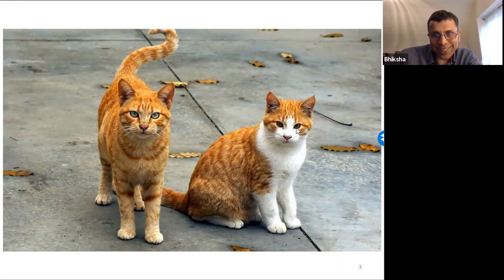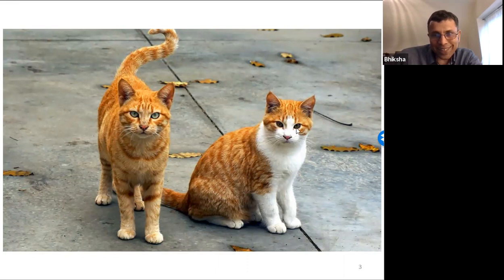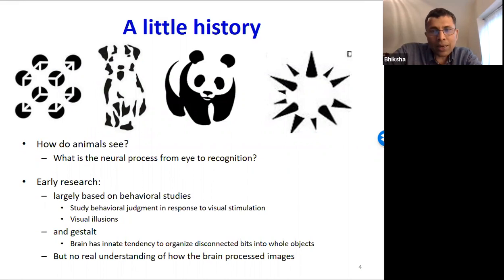Strangely enough, CNNs started off as a model for vision. People have been curious about how animal vision works for the longest time — how does the brain interpret and recognize images that form in your eye? Most early research focused on behavioral patterns: how do we respond to visual stimuli? Typical studies focused on visual illusions and phenomena like gestalt.